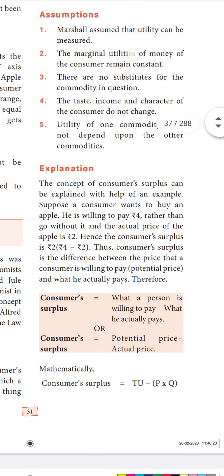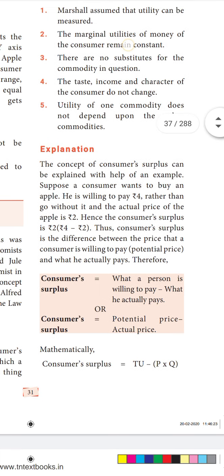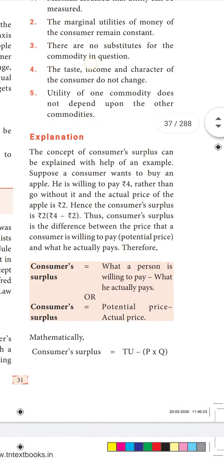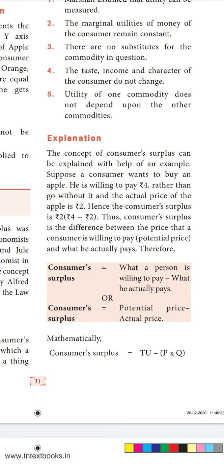Fifth assumption: the utility of one commodity does not depend upon the utility of another commodity. For example, if you buy a mobile, the satisfaction you get from it is independent of whether you also buy a screen cover, earphones, or any other accessory.